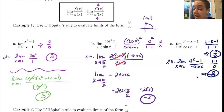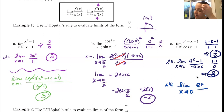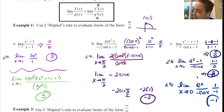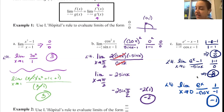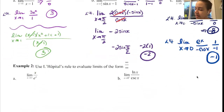You can do L'Hopital again. The derivative of eˣ is eˣ. The derivative of 1 is 0. The derivative of -sine is -cosine. In the numerator, e⁰ is 1. In the denominator, cosine of 0 is 1, so this is -1. The answer is -1. Are there limits to how many times you can do L'Hopital's rule? Nope. But if you find yourself going after five or six iterations, stop and check for an error. Two or three is more typical.